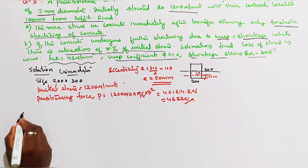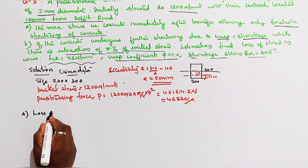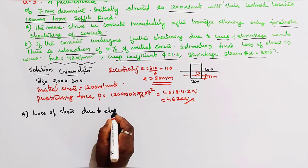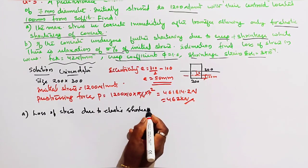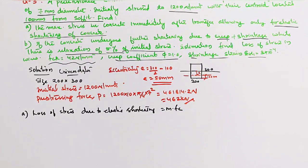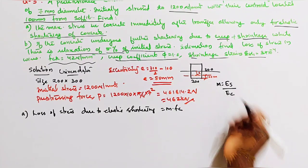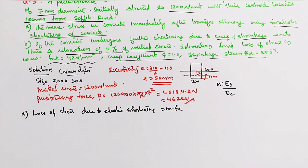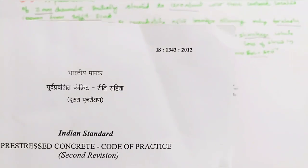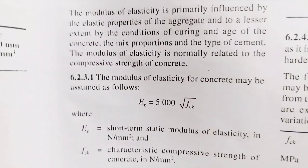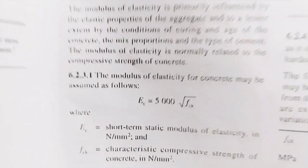For Part A — loss of stress due to elastic shortening. We know the equation: loss = m × fc, where m = ES / EC. From IS 1343:2010, page 5, modulus of elasticity for concrete: EC = 5000 × √FCK.